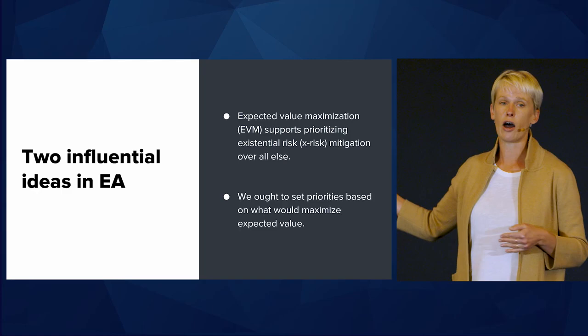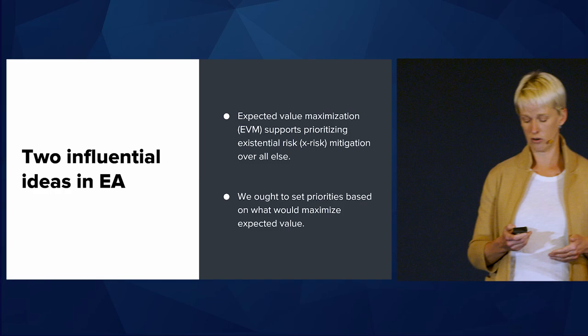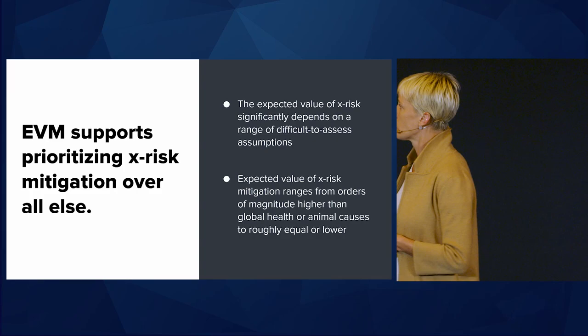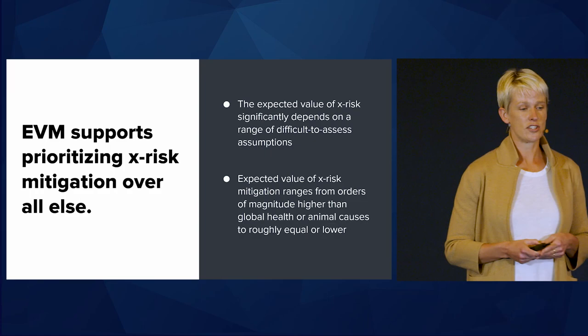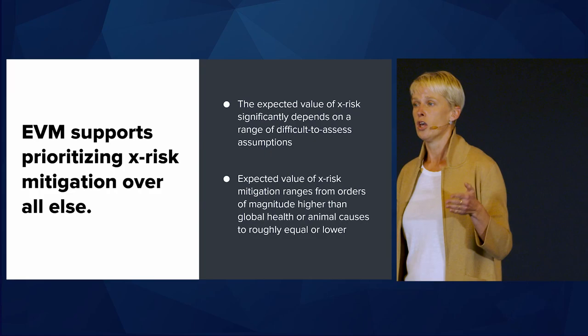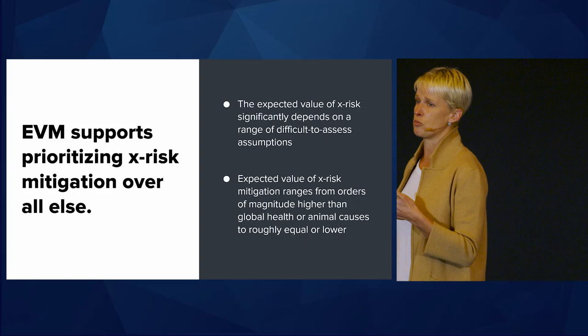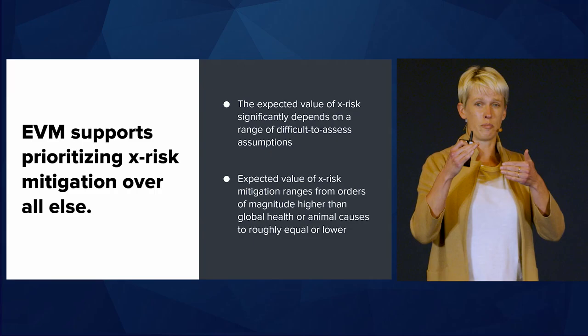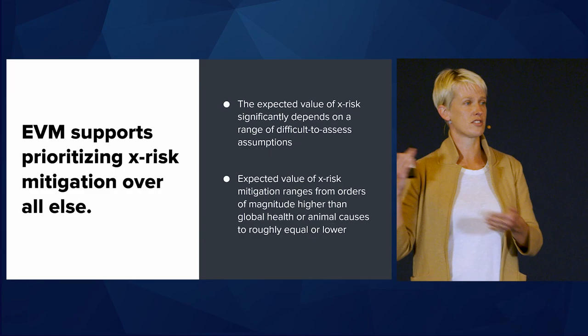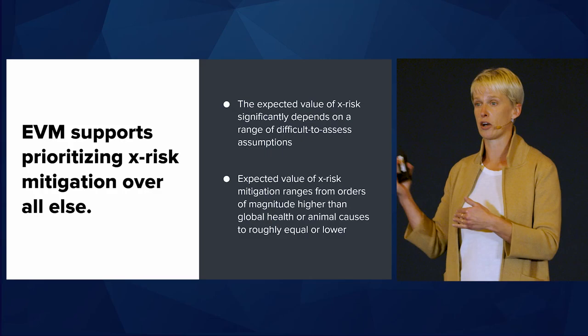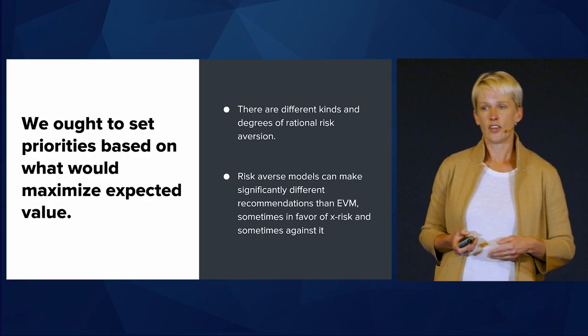The second main pillar of our research sequence was questioning whether expected value maximization is how we ought to be making decisions in the cause-prioritization space. On this first component, we showed that the expected value of x-risk mitigation efforts significantly depends on a range of assumptions that are really difficult to assess. Depending on how you come down on these assumptions — what parameter values you set for certain key variables — you can get x-risk mitigation efforts to be either orders of magnitude more cost-effective than other cause areas, to about equal or even less cost-effective.